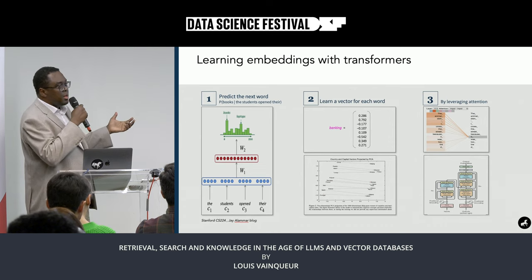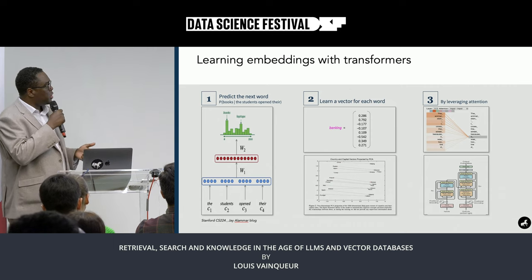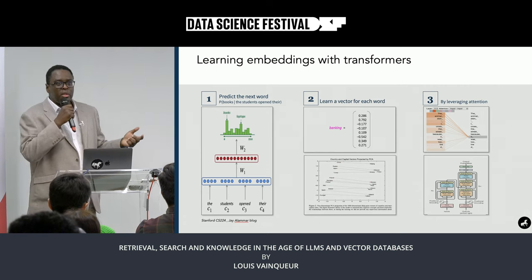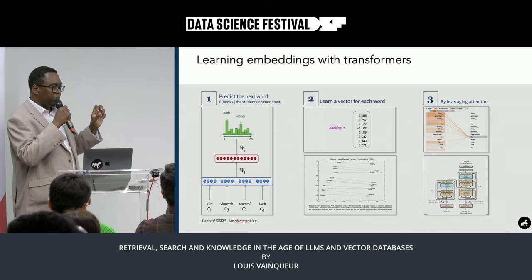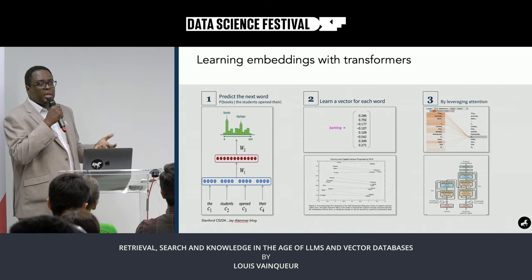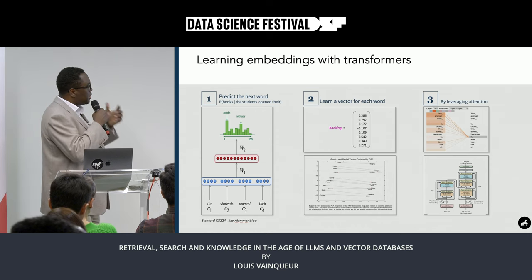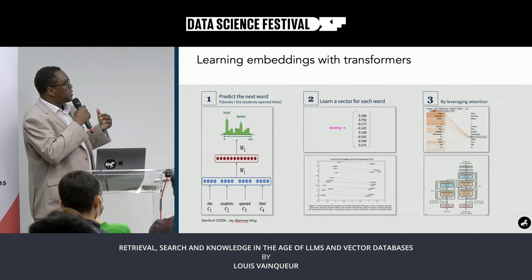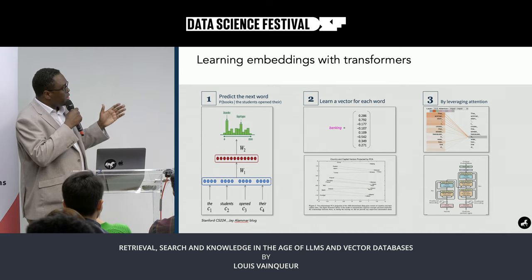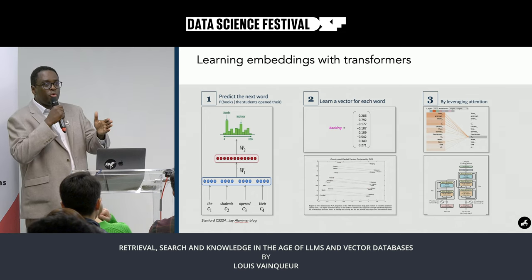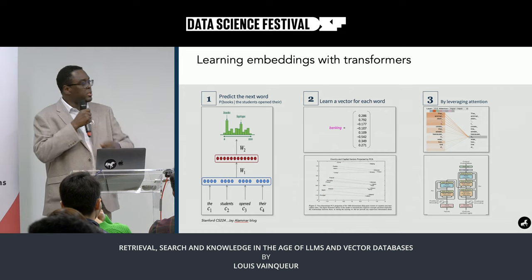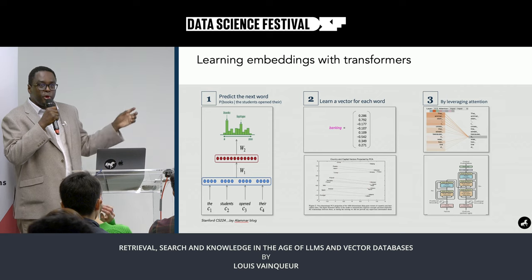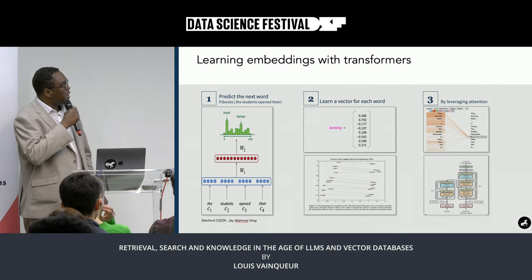Then came the Transformers. In 2017, the paper 'Attention Is All You Need' was published. The next year the BERT paper made a lot of noise. In 2020, you had GPT-3, effectively the beginning of what became ChatGPT. In the GPT case, what you're trying to predict is the next word: give it four words, predict the fifth. This is a bit different from the original architecture and from the BERT line of work.